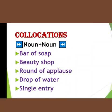Next collocation type is noun plus noun. Here both words are nouns, but we must use them in the right and proper place. For example: 'bar of soap' — if I say 'soap of bar', that is wrong. 'Beauty shop' — if I reverse it to 'shop beauty', that sounds completely unnatural. Correct is 'beauty shop'. 'Round of applause'. 'Drop of water' — 'water of drop' is wrong. 'Single entry' — it's always 'single entry', never 'entry single'. We must remember to use each noun in the appropriate position.